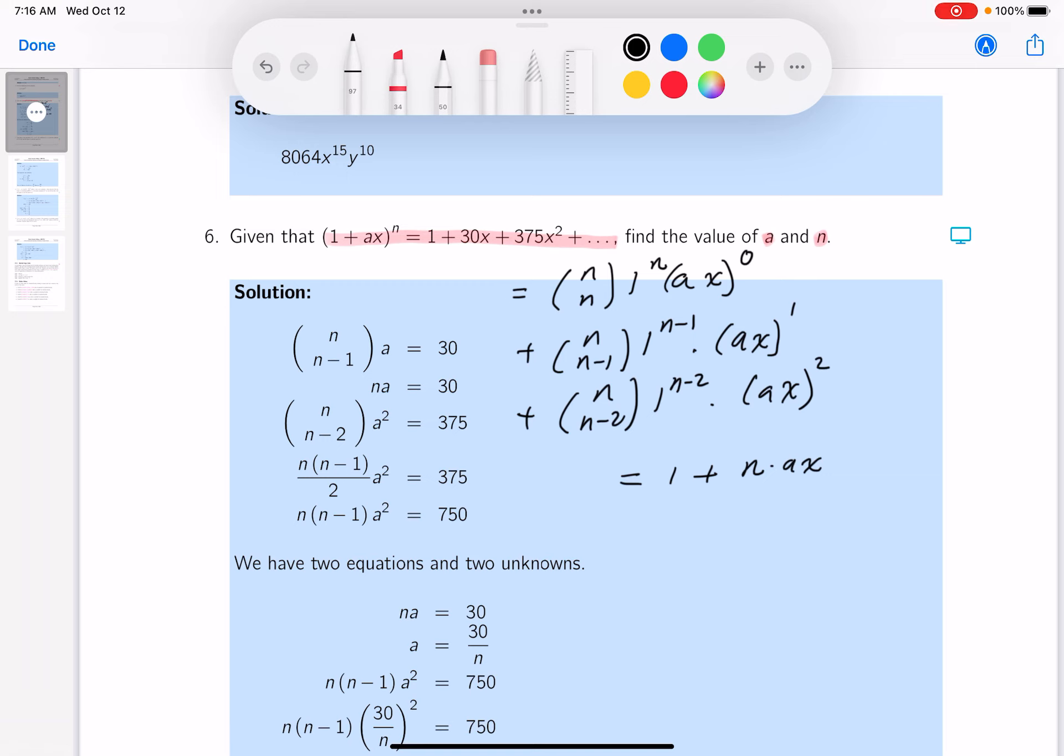And the next term, let's put this one down. A little more complicated, isn't it? It's going to be n choose n minus 2. That's going to be n factorial over n minus 2 factorial, 2 factorial. So that's going to give you n times n minus 1 over 2. And then what are you going to get? You're going to get a squared x squared.